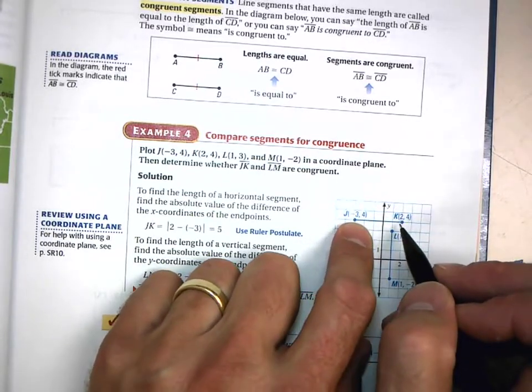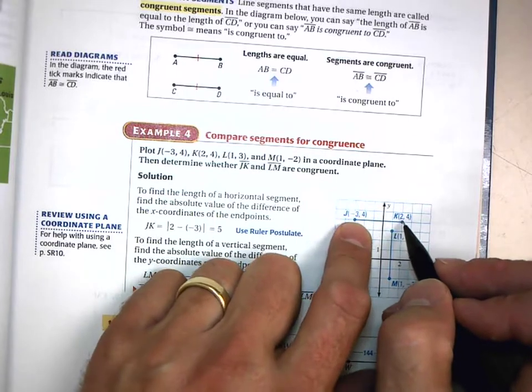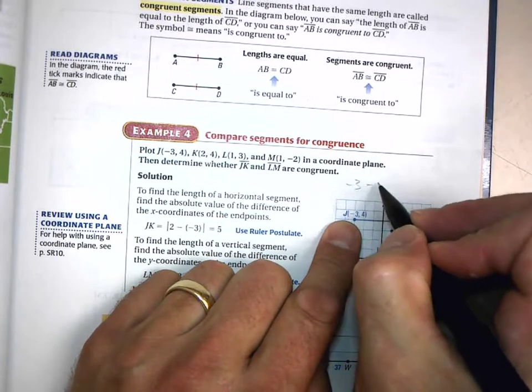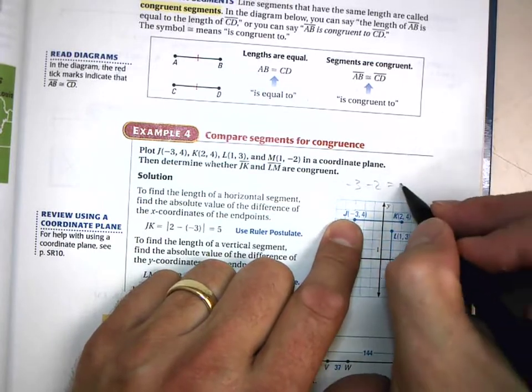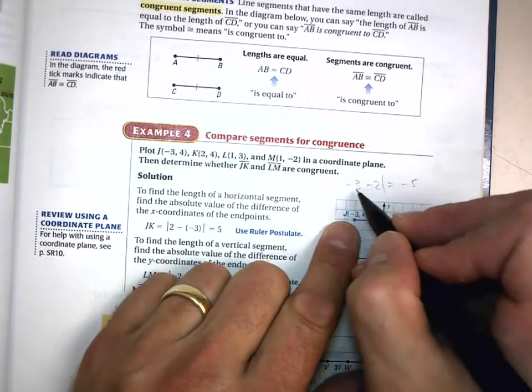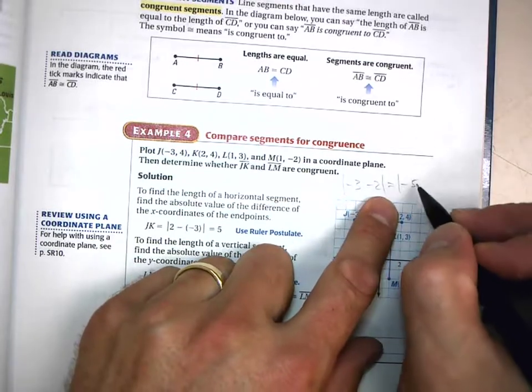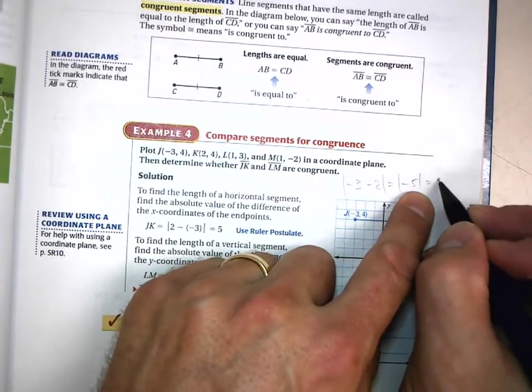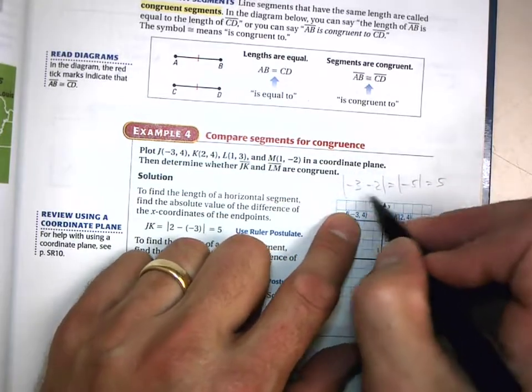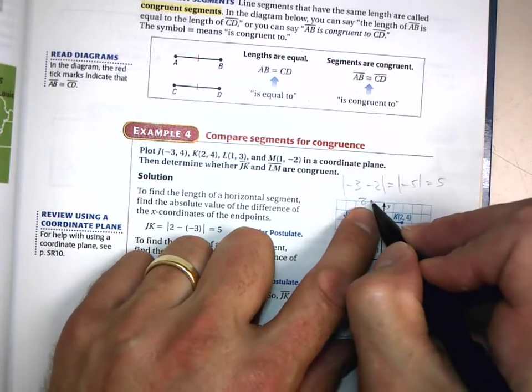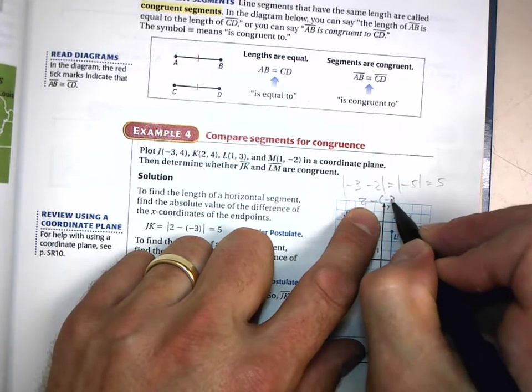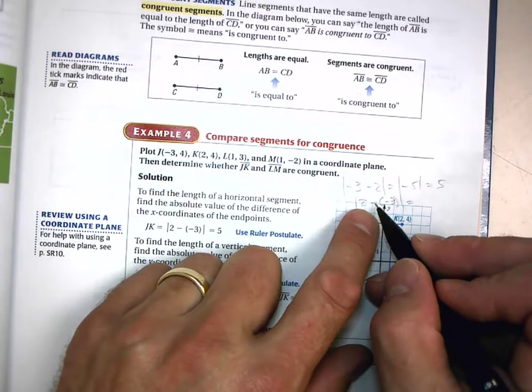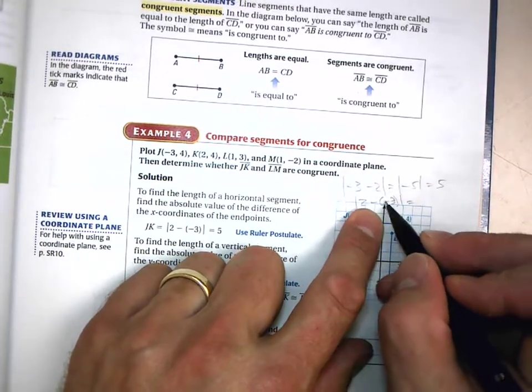But let's do it mathematically. Remember it's the absolute value of the difference of the coordinates. So negative 3 minus 2—what is negative 3 minus 2? That's negative 5. But what is the absolute value of negative 3 minus 2? The absolute value of negative 5 is positive 5.